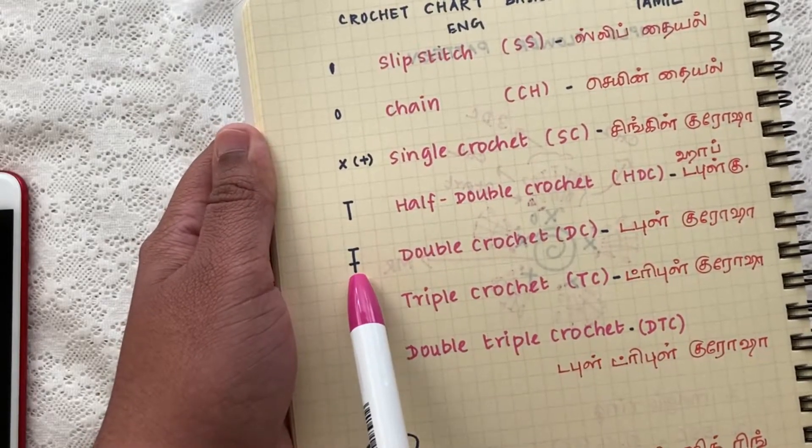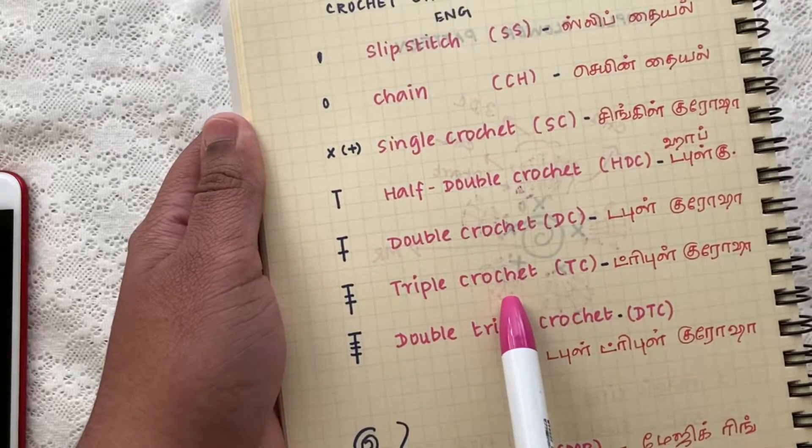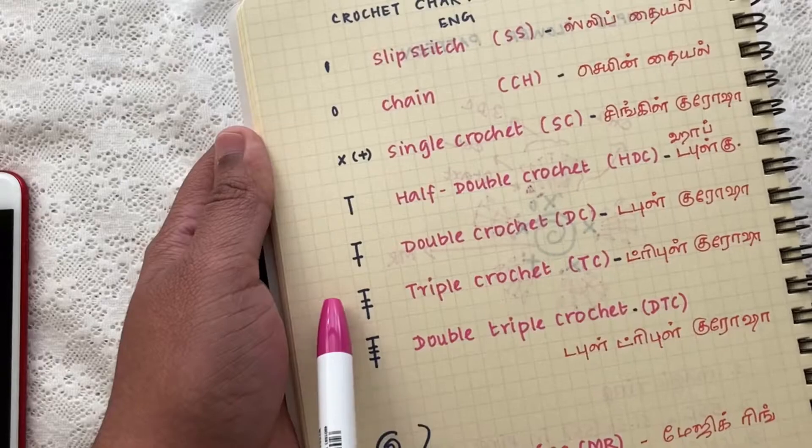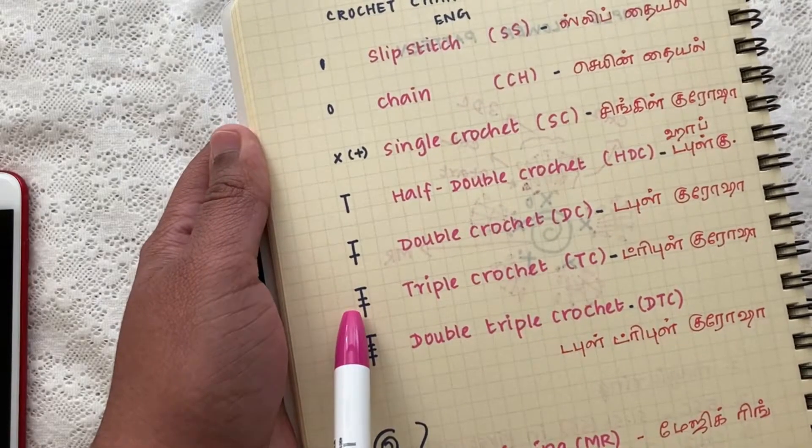And if you see for triple crochet we have to do three pull-throughs, so here we have one, two, three - three horizontal lines and the abbreviation is TC.